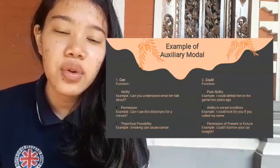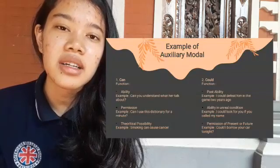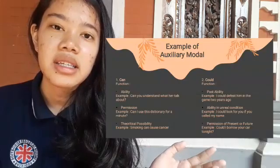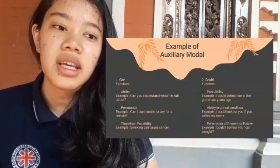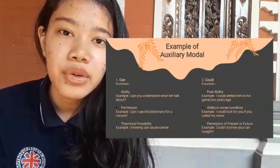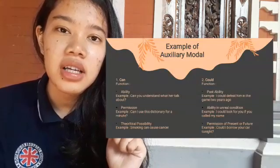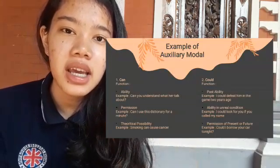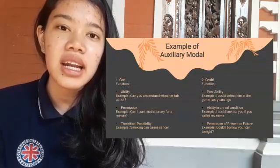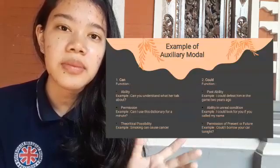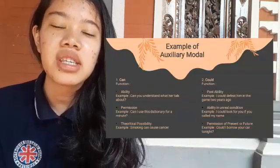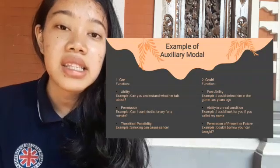Next is Could. Could has a function of possibility. For example, 'I could defeat him in the game two years ago.' Could expresses a level of possibility and is the modal used in past time, whereas Can is the modal used in present time.